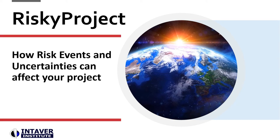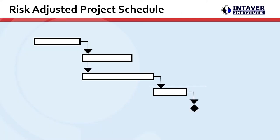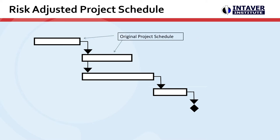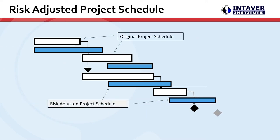In this video, we're going to look at how risks and uncertainties can affect your project. Here is a project schedule. When we run a Monte Carlo simulation with risks and uncertainties, the result is a risk-adjusted project schedule. Here we can see how this affects possible completion dates due to slippage.